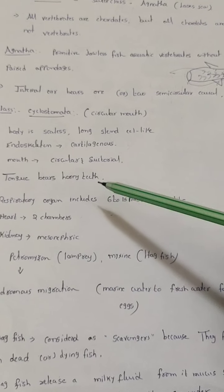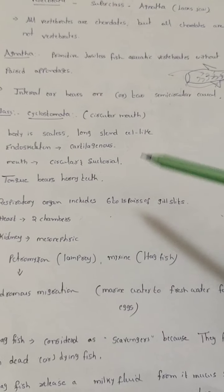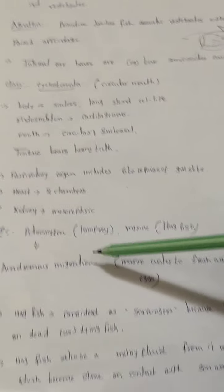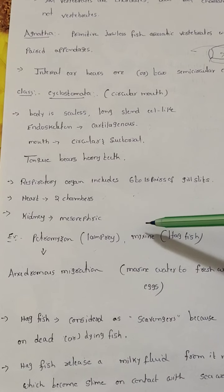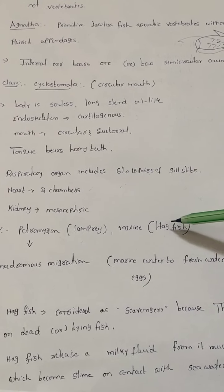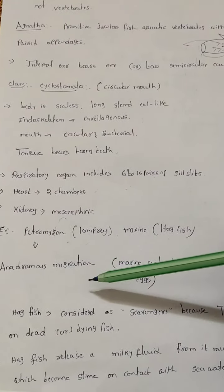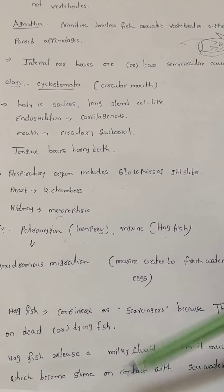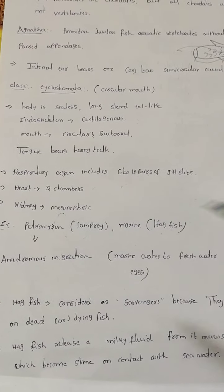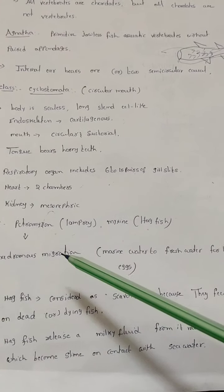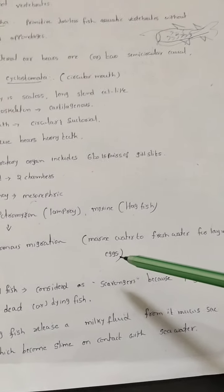The heart has two chambers, same as in fishes. The kidney is the mesonephric kidney, not well developed. The best examples are Petromyzon, commonly called lamprey, and Myxine, commonly called hagfish — both are very important. Petromyzon shows anadromous migration, meaning the organism moves from marine water to fresh water for laying eggs.